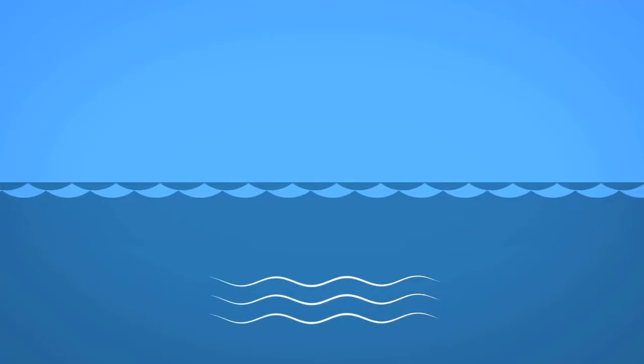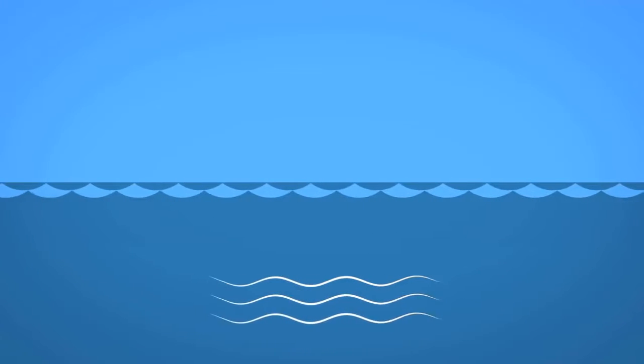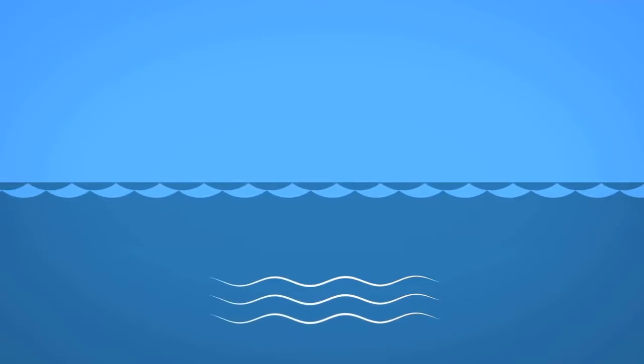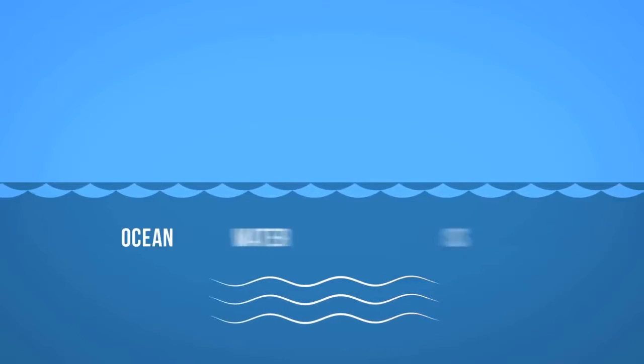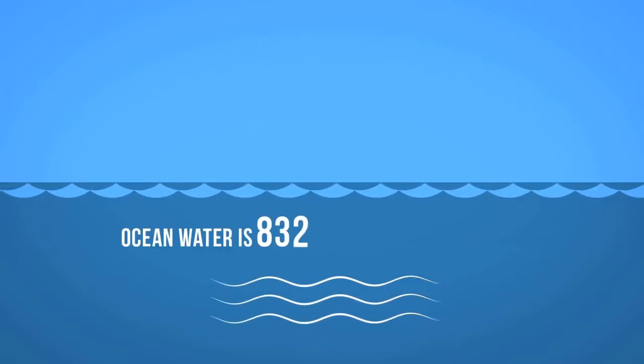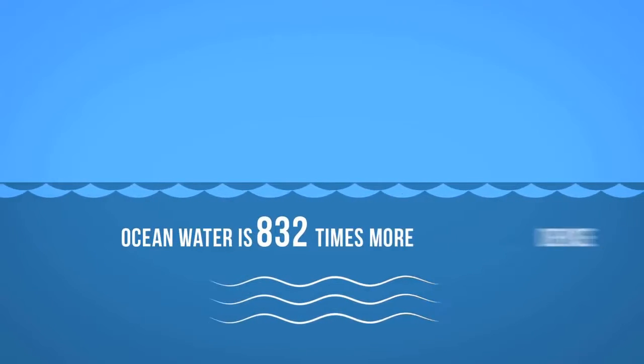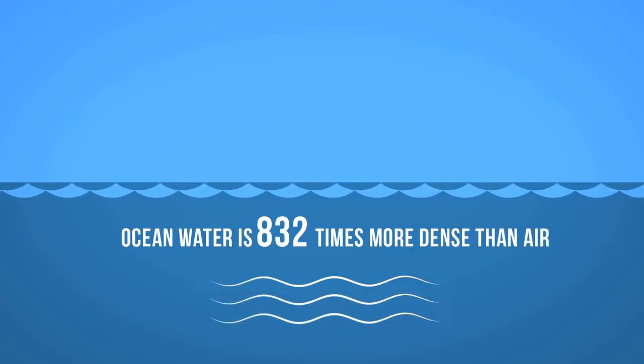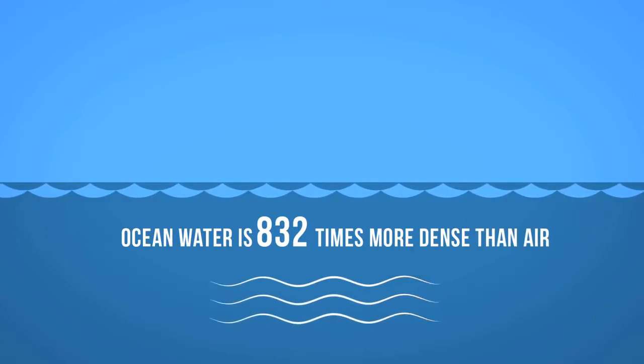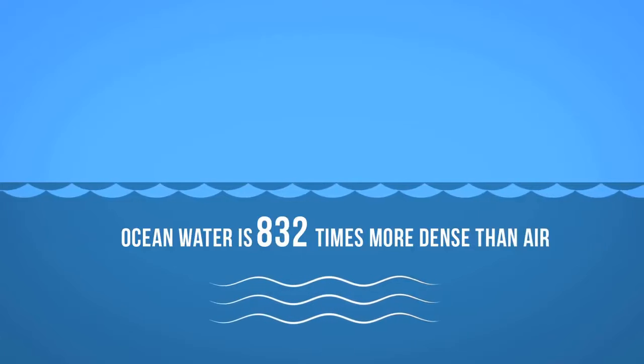Ocean currents generate relatively more energy than air currents because ocean water is 832 times more dense than air and therefore applies greater force on the turbines.